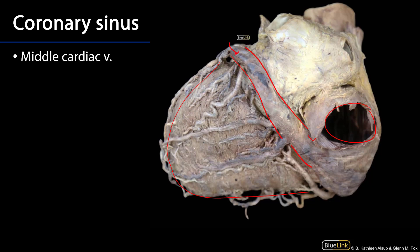There's also a middle cardiac vein. The middle cardiac vein occupies the posterior interventricular sulcus with the posterior interventricular branch of what is typically the RCA, but which may also be from the LCA or both LCA and RCA. Nevertheless, that middle cardiac vein feeds into the coronary sinus.